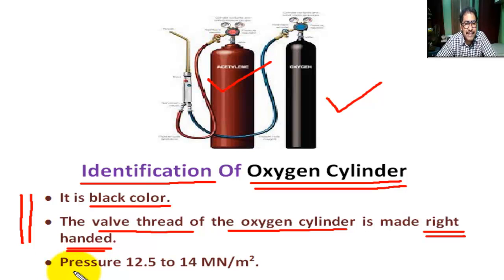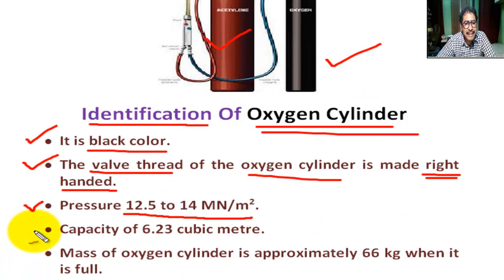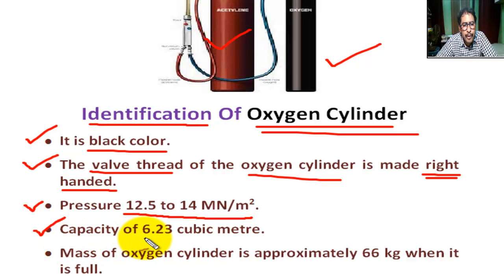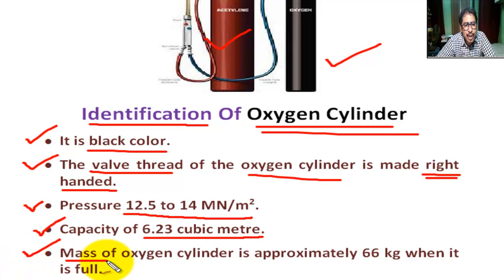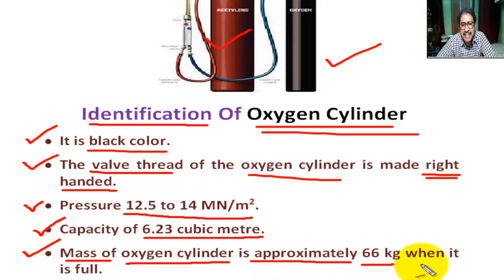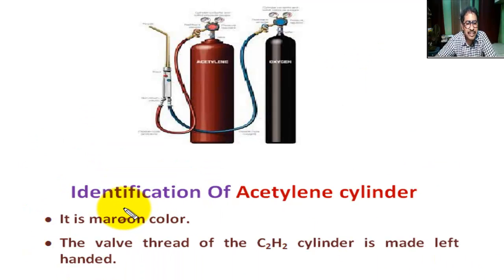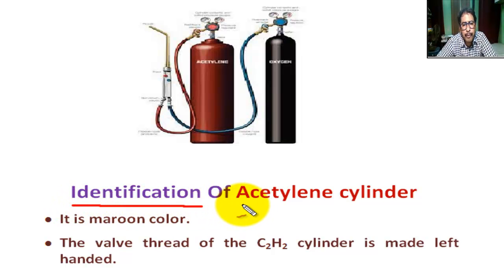The pressure of the oxygen cylinder is 12.5 to 14 mega newton per meter square. The capacity of the oxygen cylinder is approximately 66 kg when it is full.